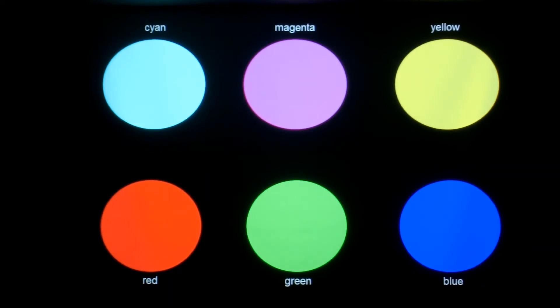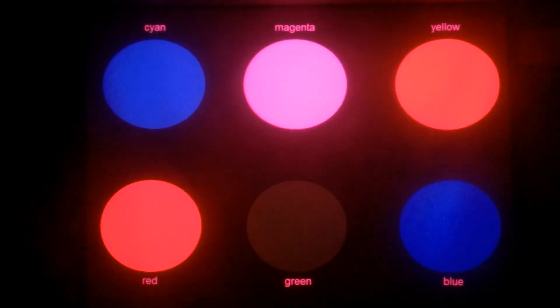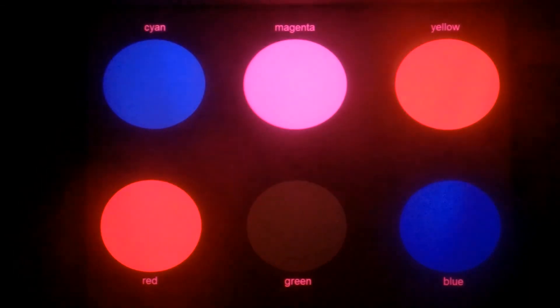A magenta filter will allow both red and blue to pass through. So when I block the camera with the magenta filter, the red and the blue pass through. So the cyan appears blue. Blue appears blue.